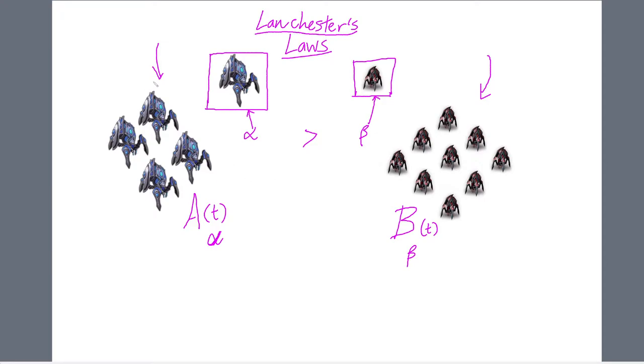Taking this army of four stalkers where each individual stalker has a power alpha, the entire army will decrease or destroy four alpha units of the opposing army every second. And this army will destroy nine beta units of the opposing army every second, where four and nine represent the number of units remaining, respectively.